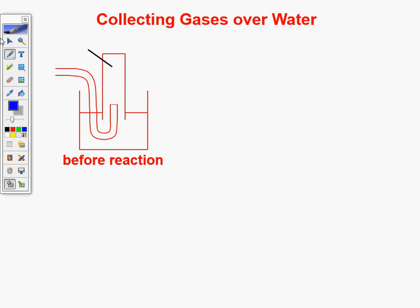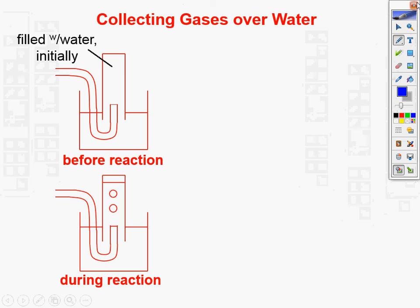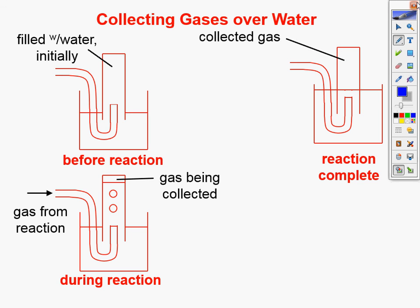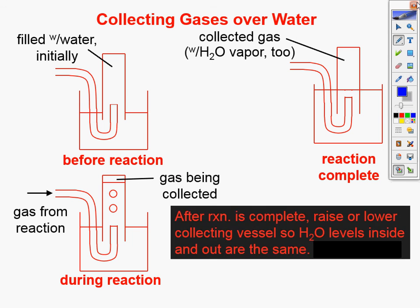Collecting gas over water — something we're going to need to do. What we do is bubble gas into water inside a container. You fill the container all the way up with water. Once you bubble in the gas, the water level drops. You're collecting the gas over water. The collected gas is going to be there along with water vapor.